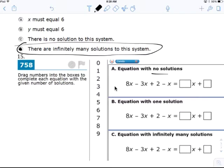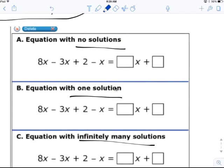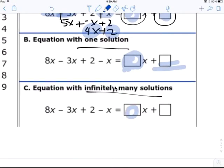So drag the numbers here to make it no solution, one solution, and infinite solution. You guys know that. Make sure you simplify this first. Additive inverse. So that gives you 5x plus negative x plus 2. That gives you 4x plus 2. So you know what number to drag here and here to make it no solution. Remember, no solution, the coefficient or rate of change is the same, while the y-intercept or the constant is different. One solution, this is different, and that's all you need. And this can be anything you want. Infinite solution, they're the same each time.